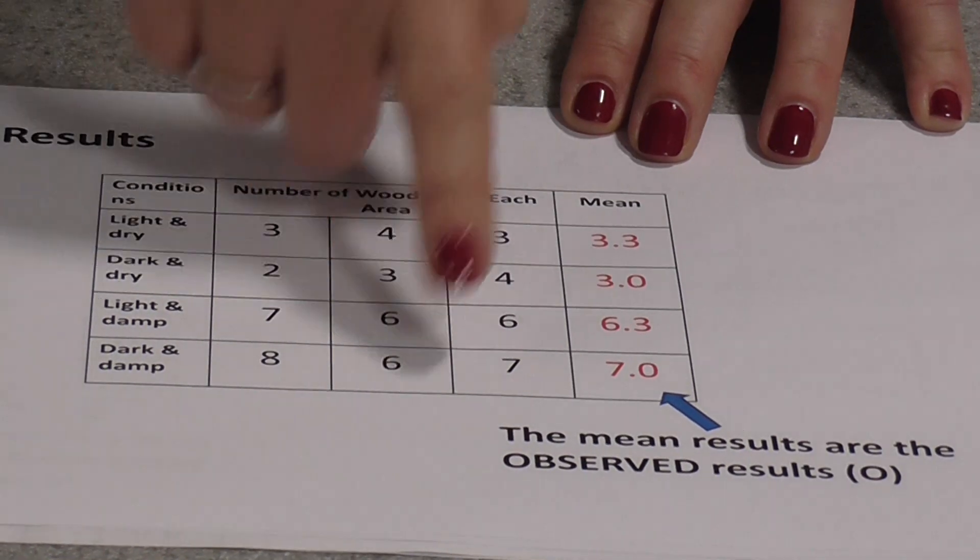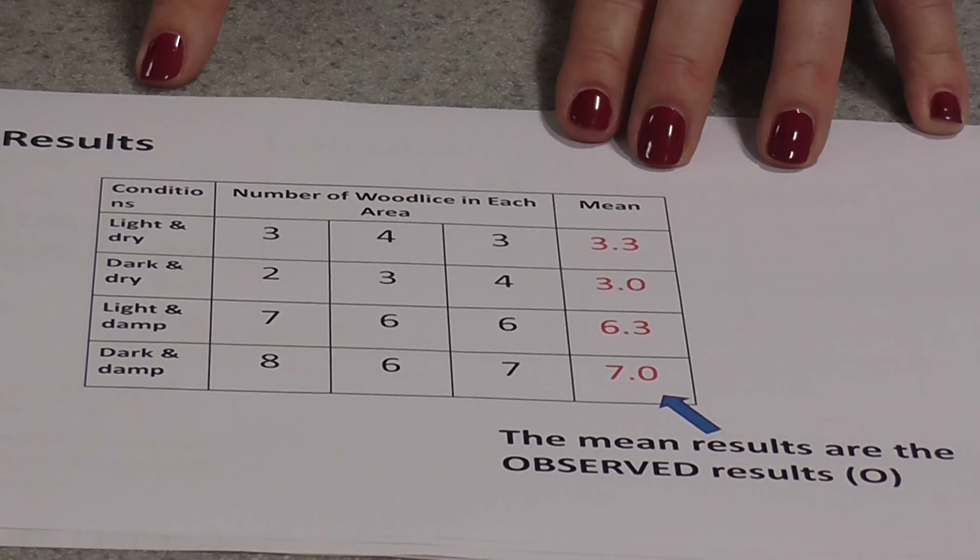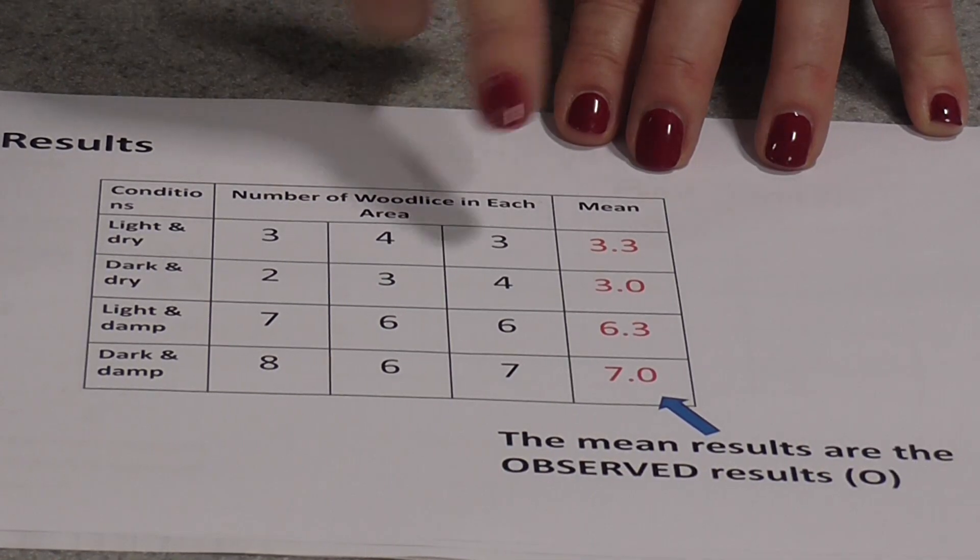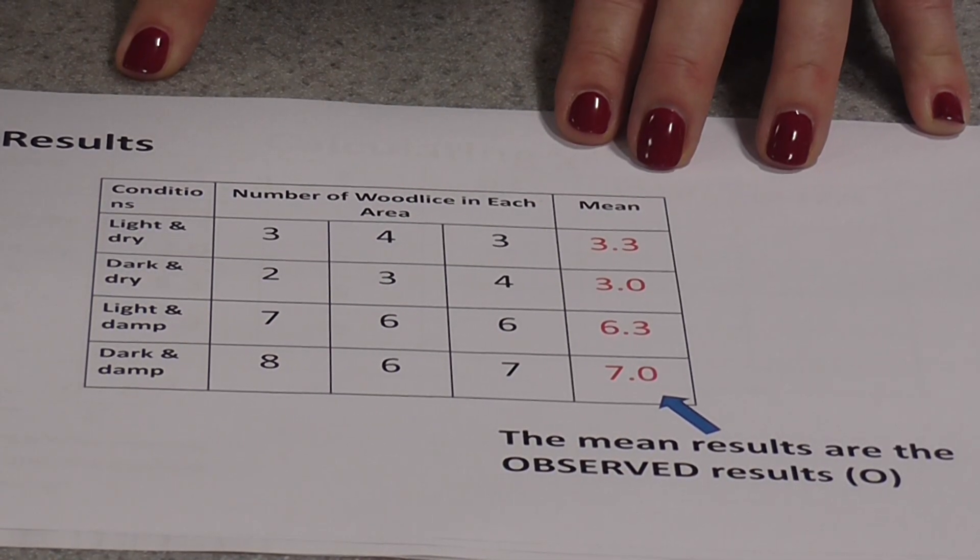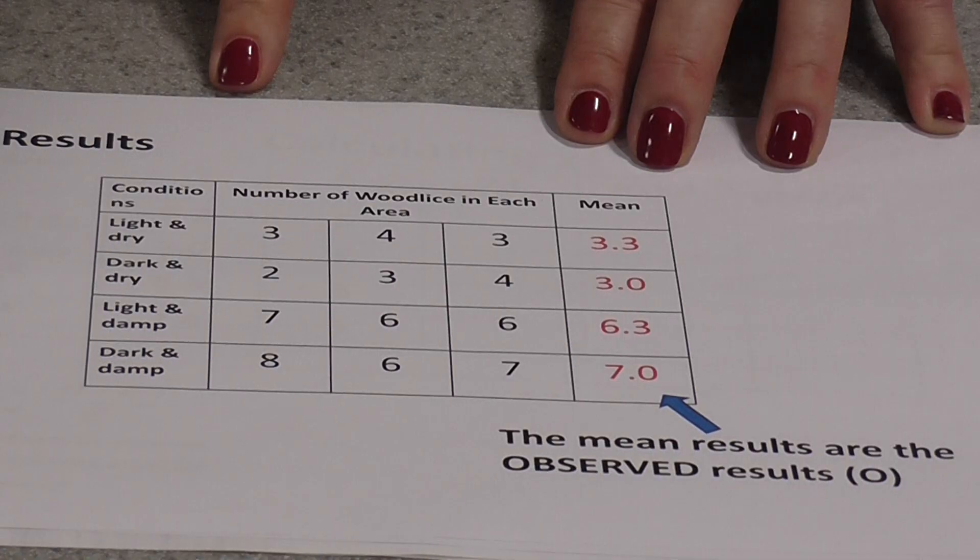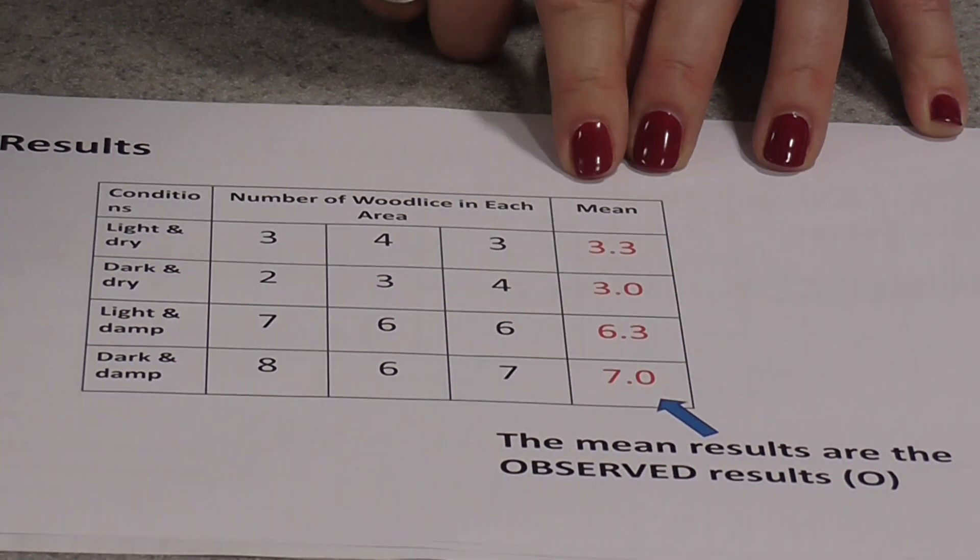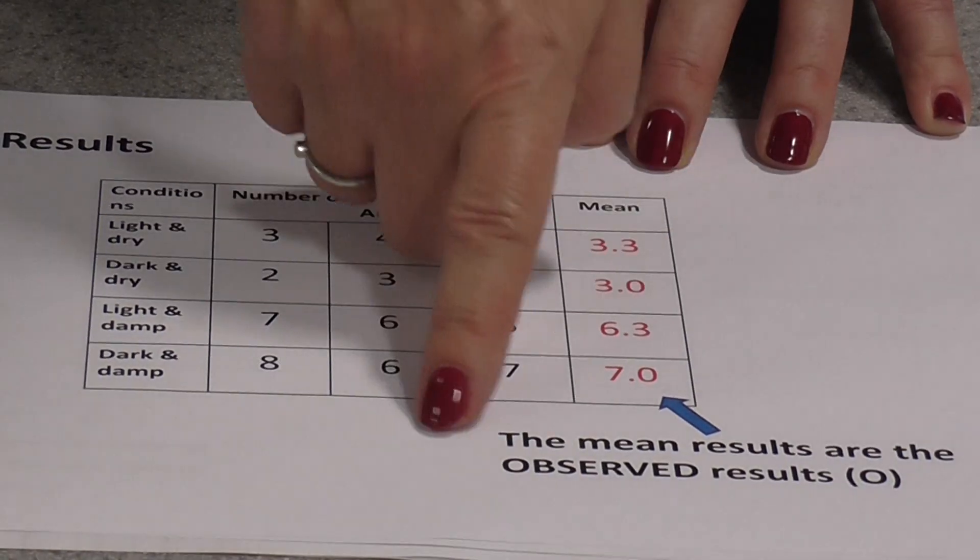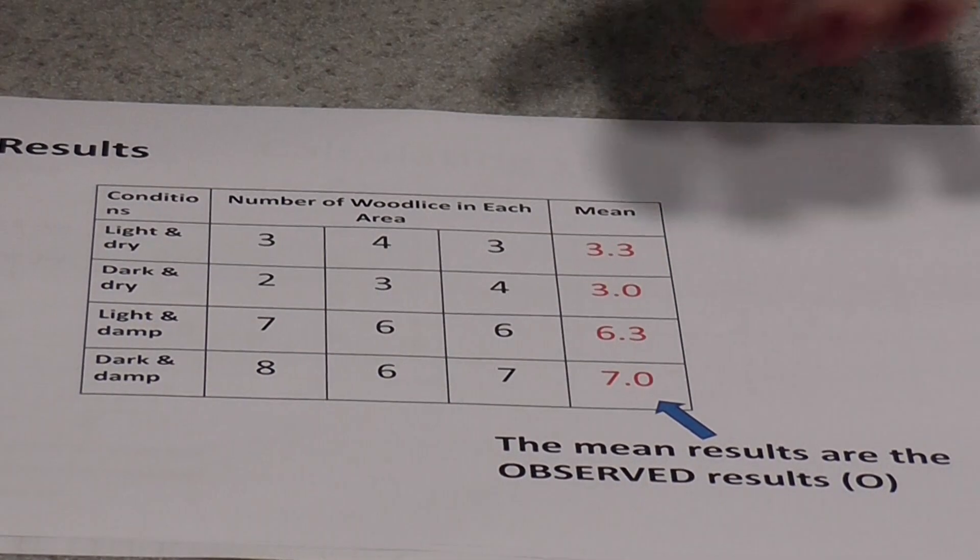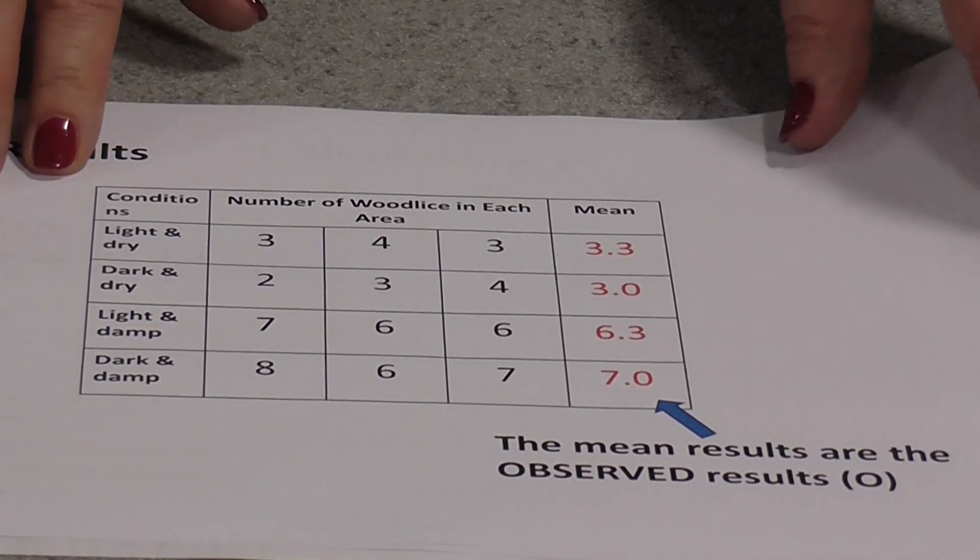These are my raw results, the number of wood lice in each section after five minutes and I did use 20 fresh wood lice each time, well fresh maggots in my case. What I've done first of all is worked out the mean there. And these will act, the means will act as the observed results when we do a little calculating later.